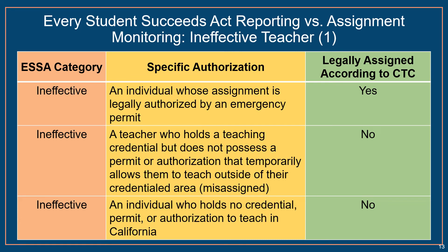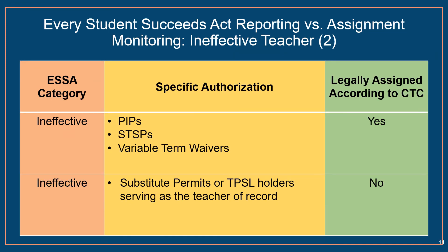One example of this is that under California's ESSA definitions, a teacher legally authorized by an emergency permit is considered ineffective. However, the CTC would consider this teacher legally assigned because they hold a document that allows them to teach outside of their credentialed area. The other two categories that the ESSA definitions assign the ineffective designation to are in agreement with CTC's designation.